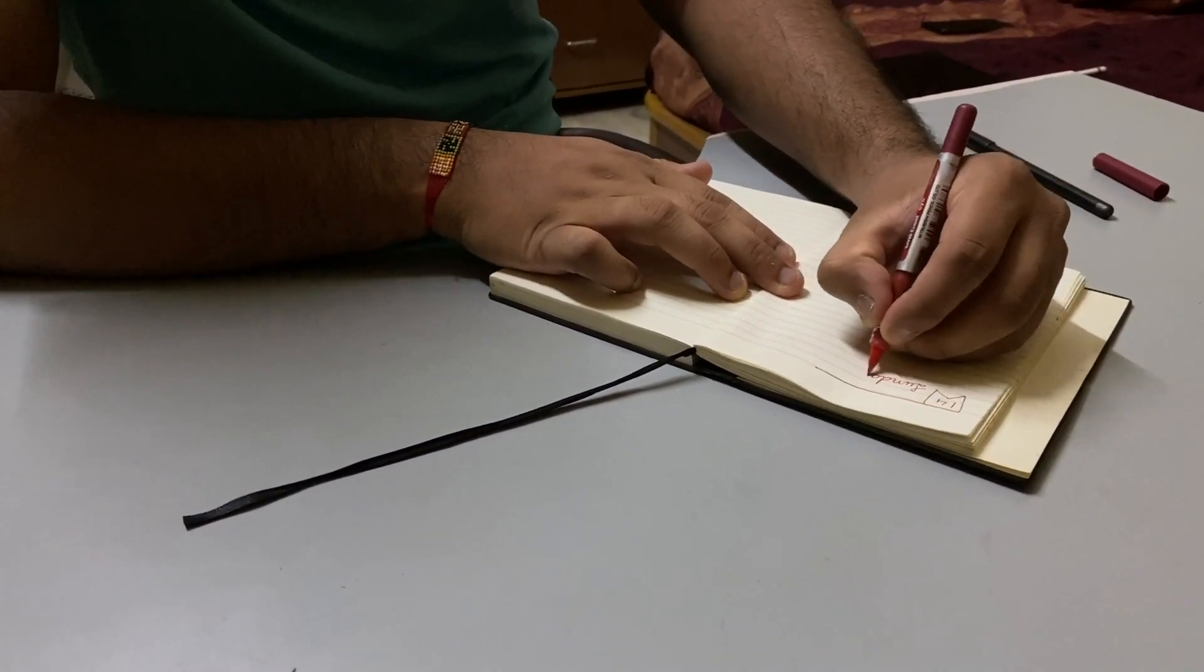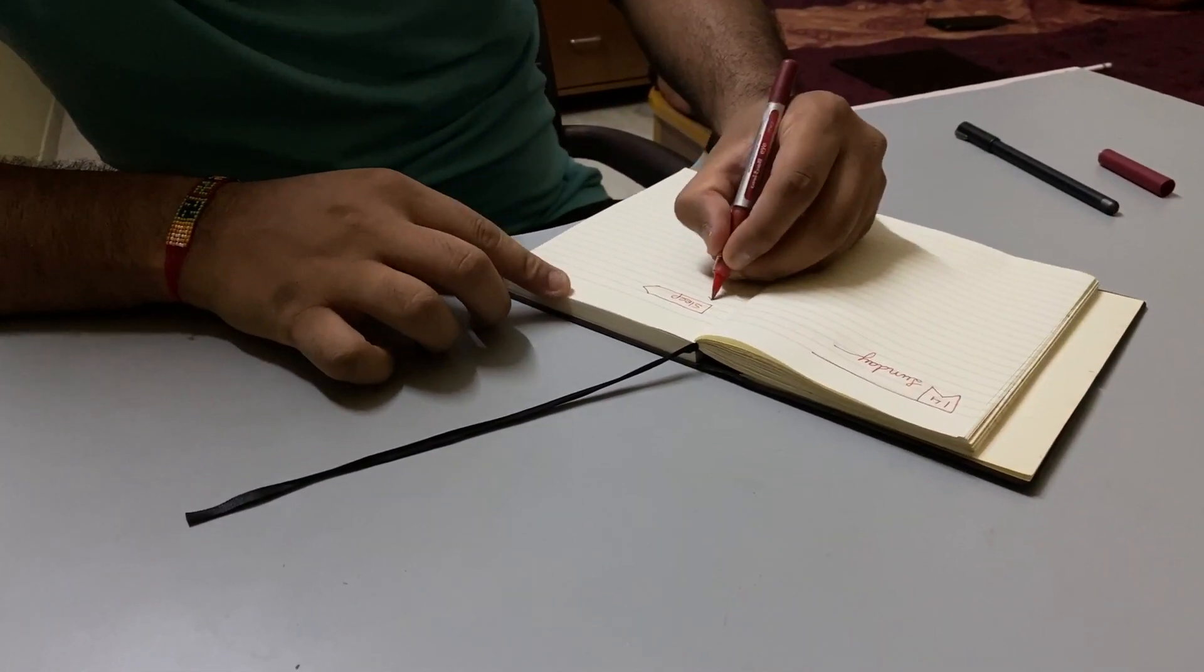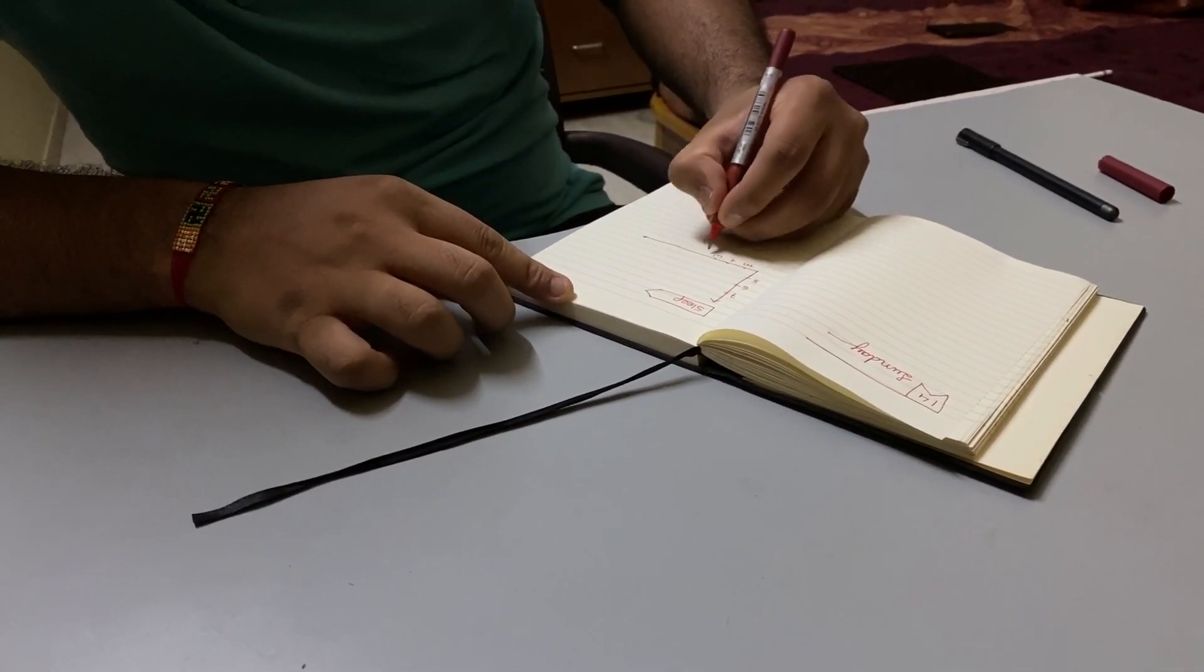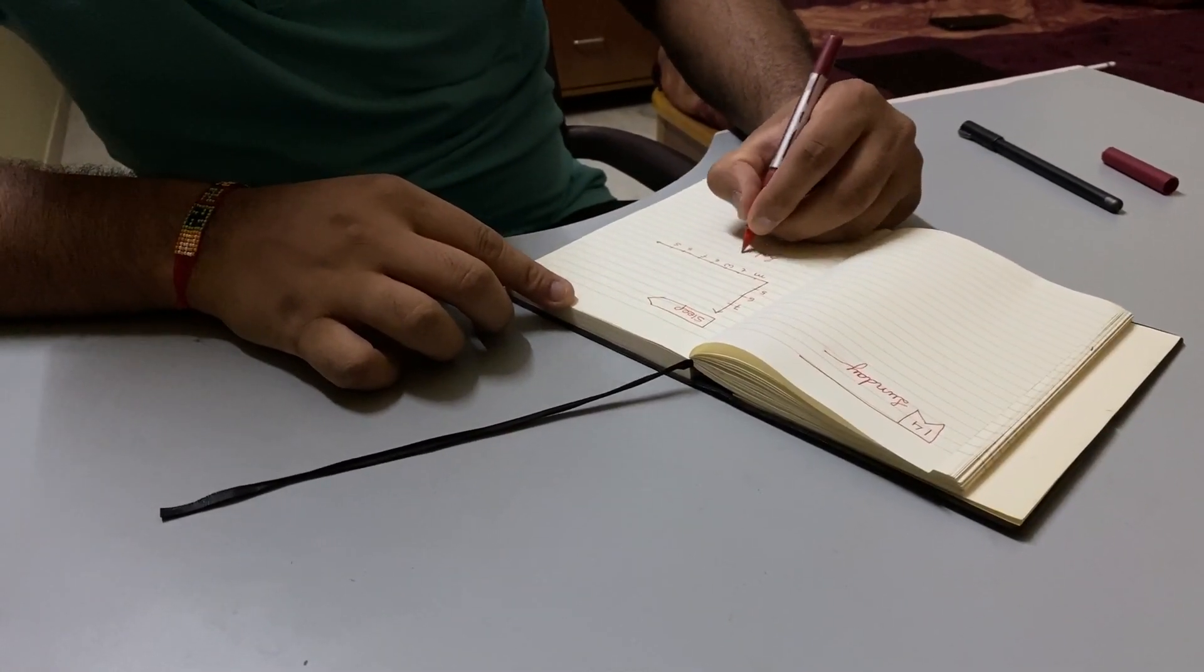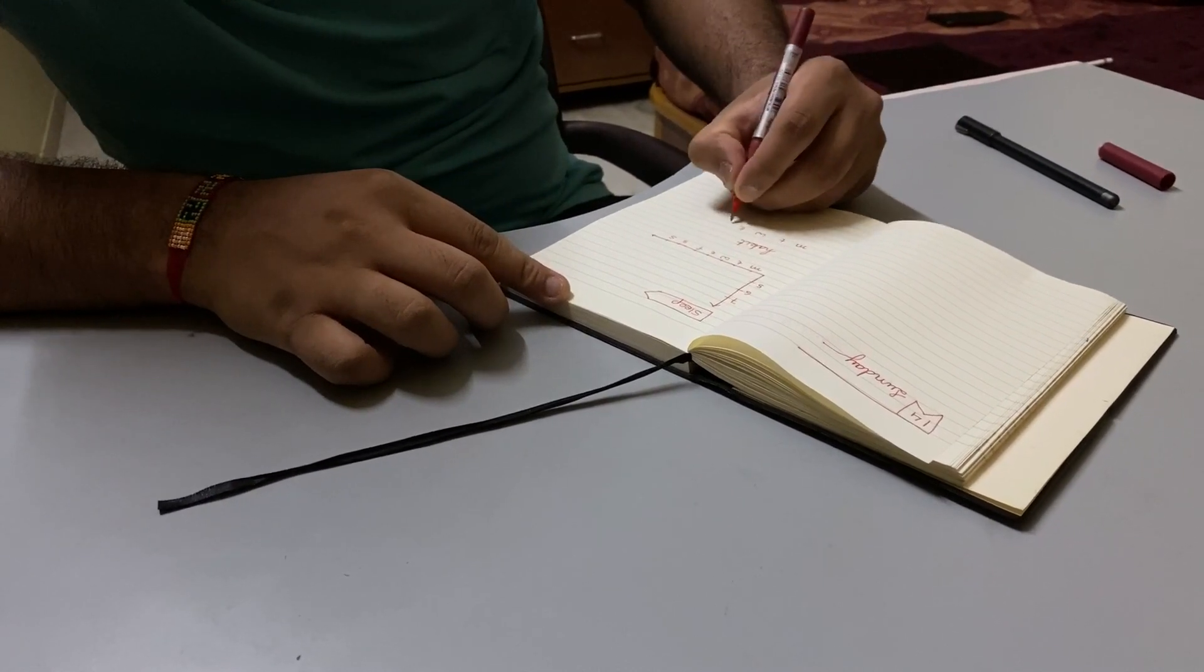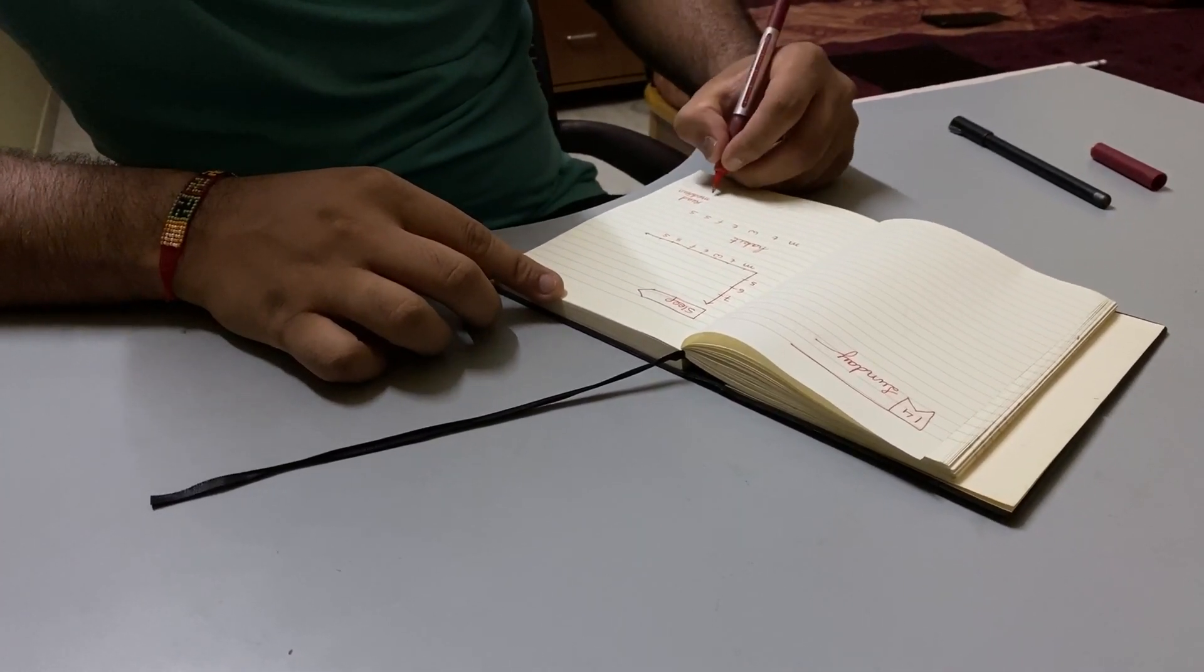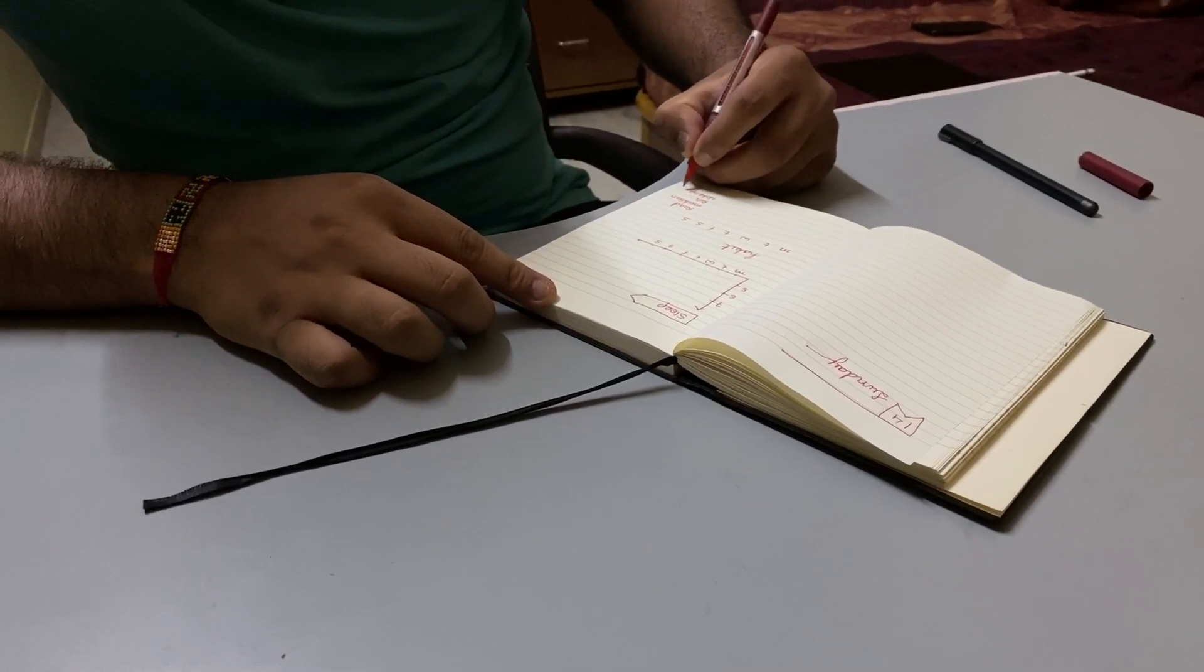On the last page I made my sleep tracker, where I am going to track how many hours I slept. And at the bottom I am going to create my weekly habit tracker. This week I'm going to track my meditation, reading a book for 30 minutes, walking, and waking up at 6 a.m.